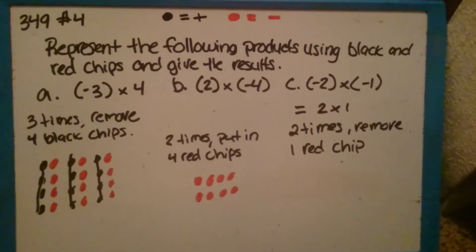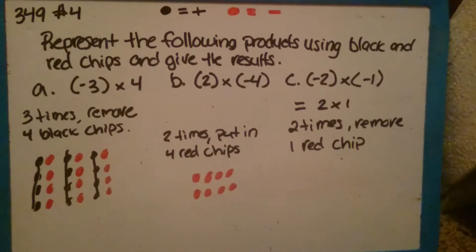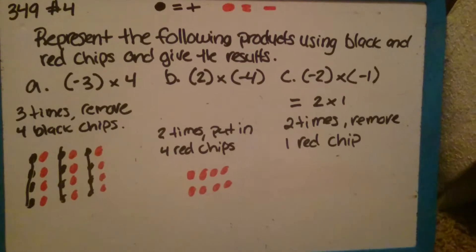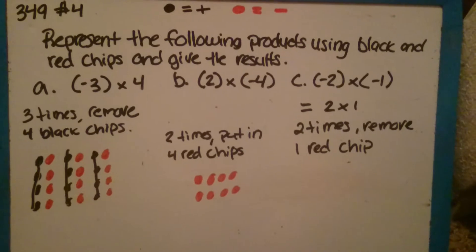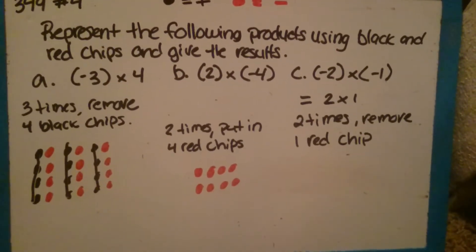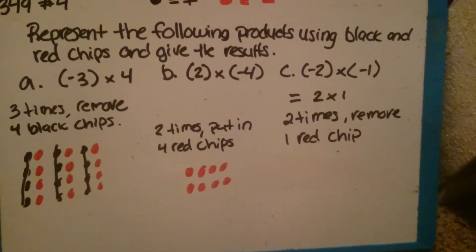On Part C, we have negative 2 times negative 1. Since a negative times a negative equals a positive, we know that negative 2 times negative 1 is the same as 2 times 1. This one is similar to Part A, where since we don't have red chips to remove, we have to add them in using 0 pairs again.